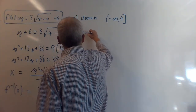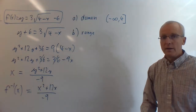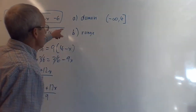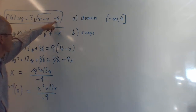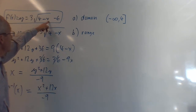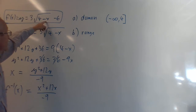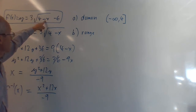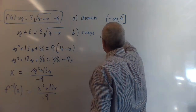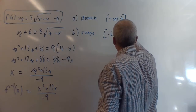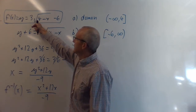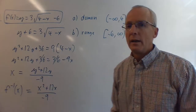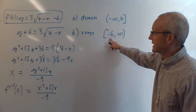For the range, we plug in extreme values. When x = 4: 4 - 4 = 0, square root of 0 is 0, times 3 minus 6 gives -6. When x goes to negative infinity, the square root term grows without bound, so f(x) can get infinitely large. The smallest value is -6, so the range is [-6, ∞).